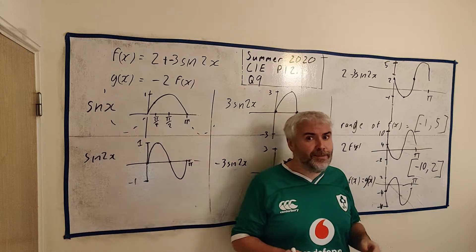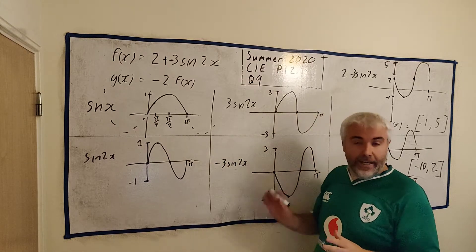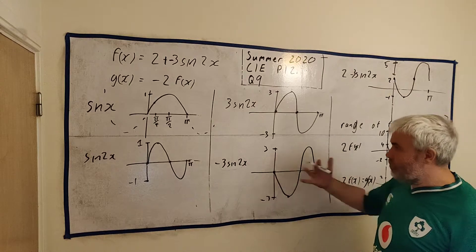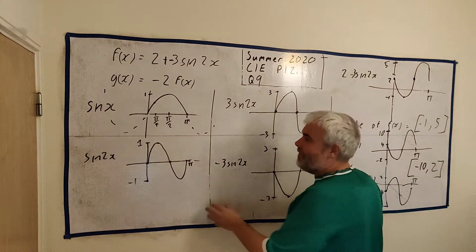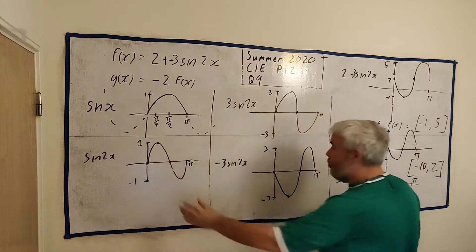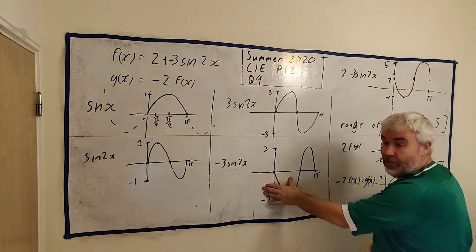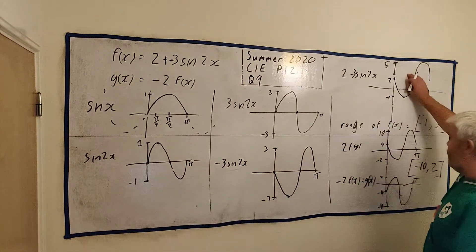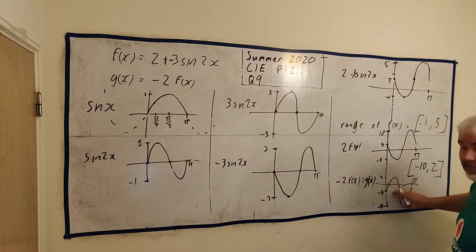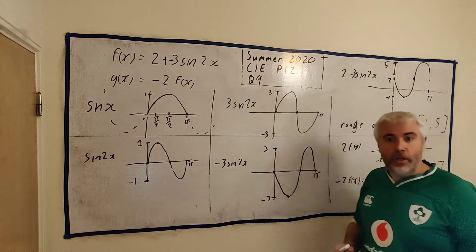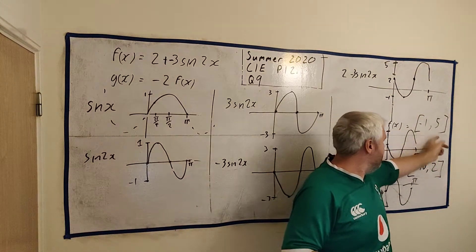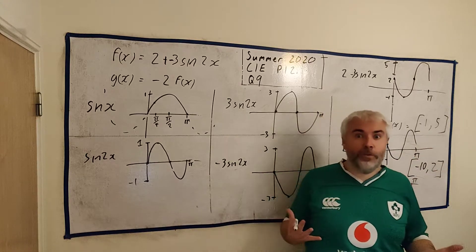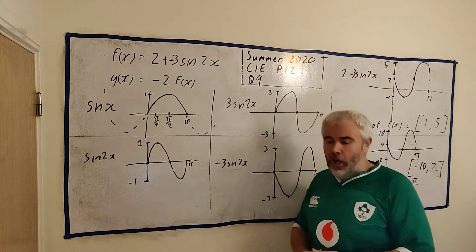Your examiner might be a little suspicious with no working, so I would add in a little bit here and there — like showing the intermediate pictures. But you would get full marks by just writing these two sets of numbers, because it shows you must have understood it all. Okay, so that's part A.